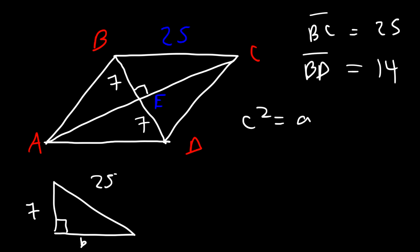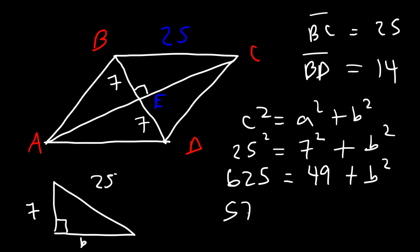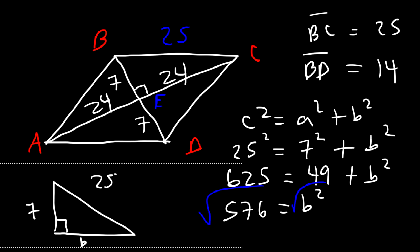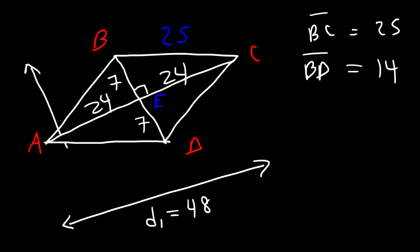Using the Pythagorean theorem: c squared equals a squared plus b squared, where c is 25 and a is 7. So 25 squared is 625, 7 squared is 49, and 625 minus 49 is 576. Taking the square root of 576 gives 24, so CE is 24 and AE is also 24. Therefore diagonal AC is 24 plus 24, or 48, and diagonal BD is 7 plus 7, or 14.